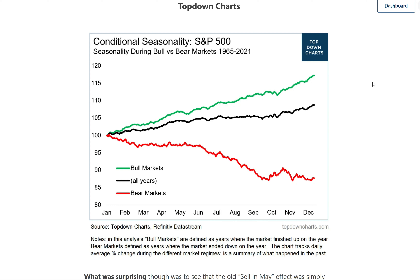What if everything you've been taught about seasonality is wrong? What we're looking at here is the Chart of the Week, and we're calling this conditional seasonality — basically what seasonality looks like if you track it across different types of market regimes. You've probably heard some of the old chestnut market seasonality wisdoms, things like the Santa Claus rally, the year-end rally, a lot of talk about that.